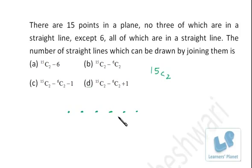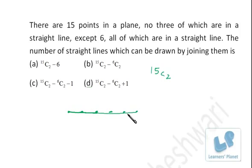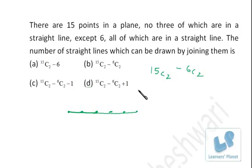The six collinear points won't give us 6C2 separate lines, because all combinations of those points lie on the same single line. If I join any two of them, the line is hidden behind the one complete line through all six. So I need to deduct all the combinations formed by these six points — that is, deduct 6C2.